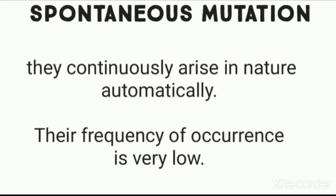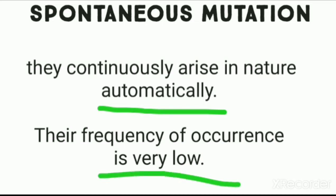Now let's understand the facts related to spontaneous mutations. Spontaneous mutations continuously arise in nature automatically — they keep occurring continuously in nature. And their frequency of occurrence is very low. Spontaneous mutations naturally occur, and the mutagens involved are natural agents such as electric current, atomic particles, and temperature.